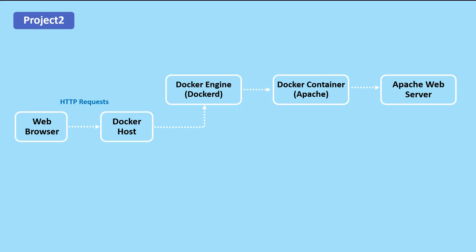The Docker container is running on the Docker host, which is a machine that runs the Docker engine. The Docker engine communicates with the Docker API, which is used to manage containers and images. The Docker engine manages the container lifecycle including creation, start, stop, and deletion of containers.